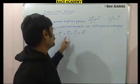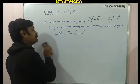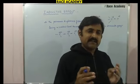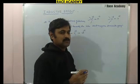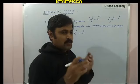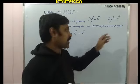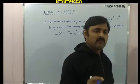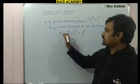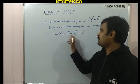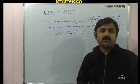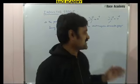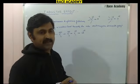This is called negative inductive effect. Chlorine has greater electron affinity than carbon, and it tries to take electron density from C1, which continues up to C2 and C3. The sigma bond electrons try to move towards the electronegative group. Inductive effect is represented by an arrow mark pointing towards the more electronegative element or group. This is called negative inductive effect or -I effect.